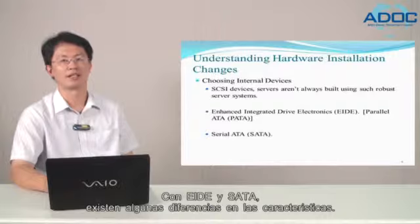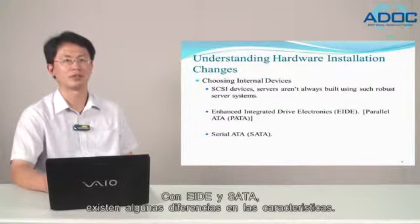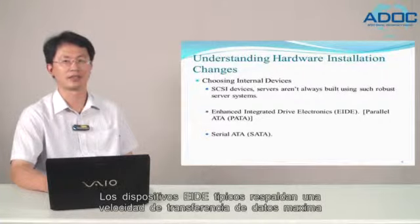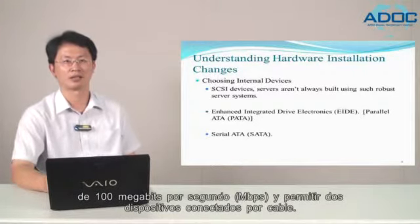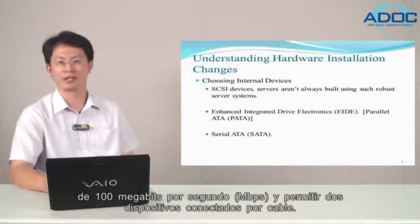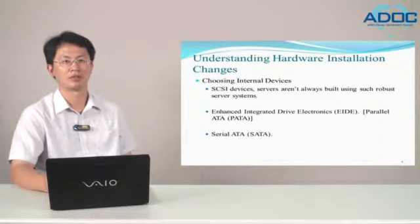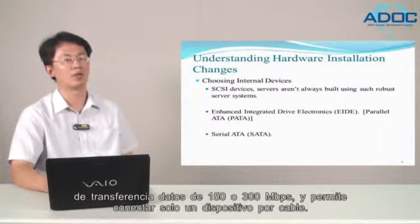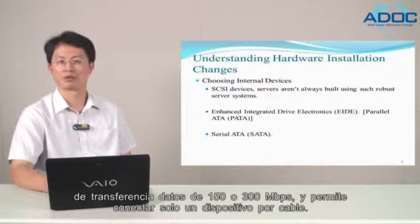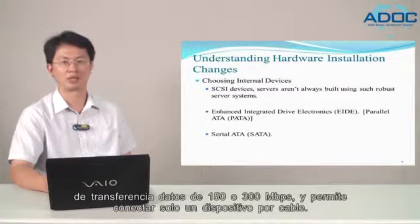With EIDE and serial ATA, there are some feature differences. Typical EIDE devices support a maximum data transfer rate of 100 Mbps and allow two devices to be connected per cable. On the other hand, typical serial ATA devices have a maximum data transfer rate of 150 or 300 Mbps and allow you to connect only one device per cable.